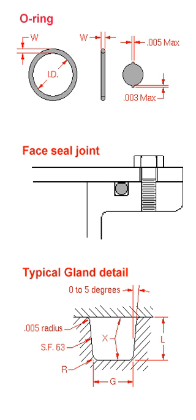3. Explosive decompression, also called an O-ring embolism or gas expansion rupture, occurs when high-pressure gas becomes trapped inside the elastomeric seal element. This expansion causes blisters and ruptures on the surface of the seal.